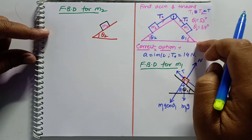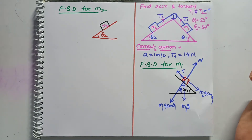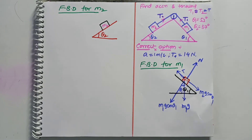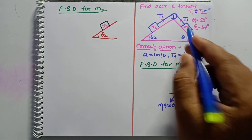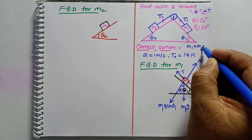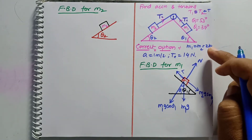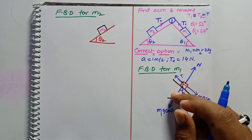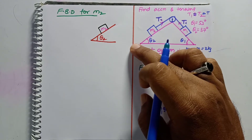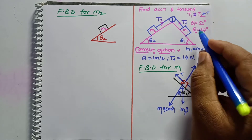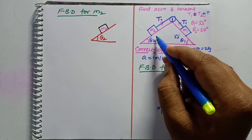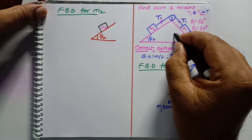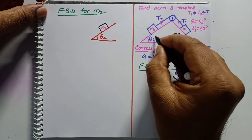We don't know whether the block is going this way or that way, but we know the masses given. Let us consider m1 = m2 = 2 kg — both masses are the same. Can you tell which direction the block moves by seeing the angles? θ1 is 53 degrees.